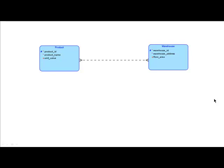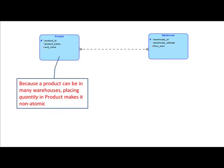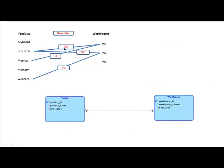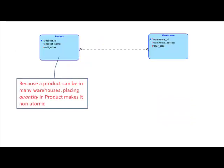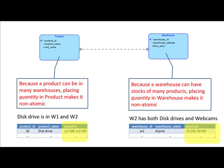If you think about it carefully, quantity is really an attribute of the relationship, not of either entity type — because when you say 'I've got 100 disk drives in Warehouse 2', you can't mention the quantity with just one entity type. You have to mention both, because you're talking about so many units of a product in a specific warehouse. That's why in the original diagram, quantity is shown on the line — not on either side — indicating it's an attribute of the relationship.